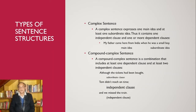Now let us look at the complex sentence. A complex sentence expresses one main idea and at least one subordinate idea. It contains one independent clause and one or more dependent clauses. For example: 'My father came here from India when he was a small boy' — where 'when he was a small boy' is the subordinate clause.